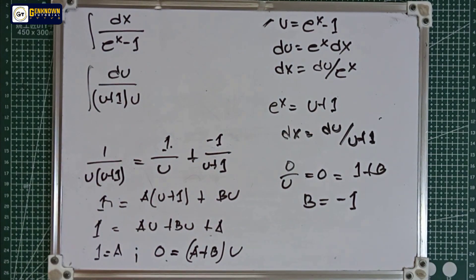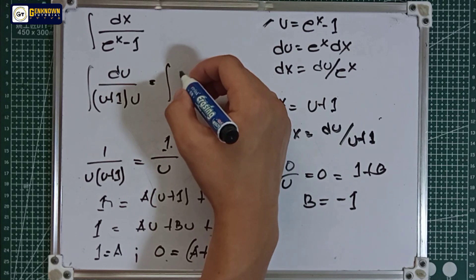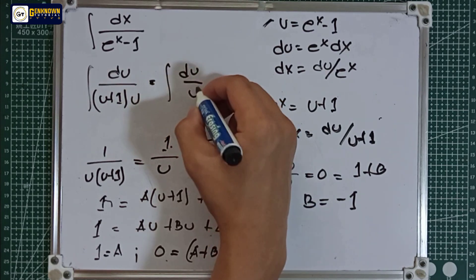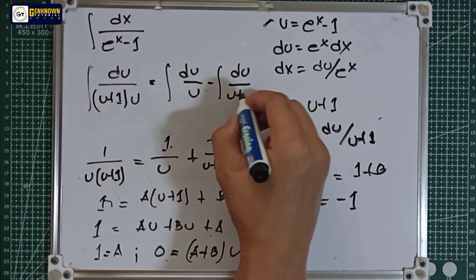So we will now have a new equation equal to the integral of du over u minus the integral of du over u plus 1.